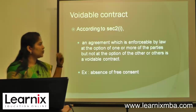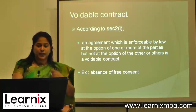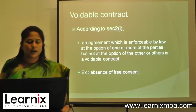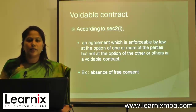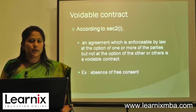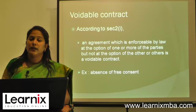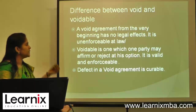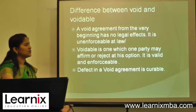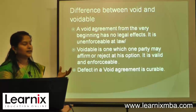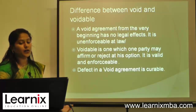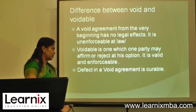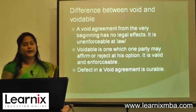Voidable contract: according to Section 2(i), an agreement which is enforceable by law at the option of one or more parties but not at the option of the other is a voidable contract. For example, if consent is obtained through coercion or lack of free consent, the contract is voidable. The aggrieved party may affirm or reject it. The key difference: a void agreement has no legal effect from the beginning, while a voidable contract can be affirmed or rejected — the defect is curable.